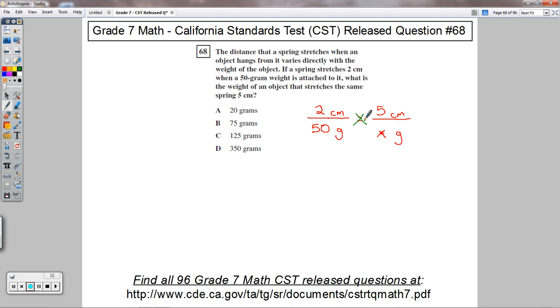From there, you can cross-multiply. And that would be 2X equals 250. Divide both sides by 2, leaving you with 125. And this would be in terms of grams, since X was grams there. So 125 grams. The final answer on this one is choice C.